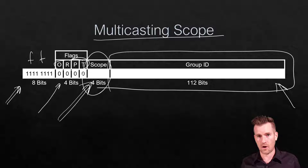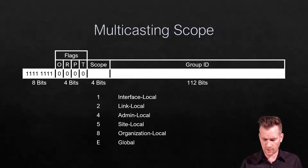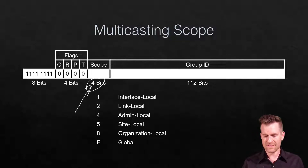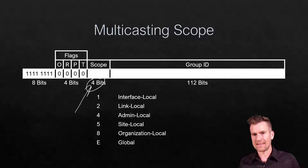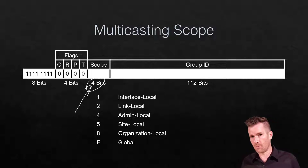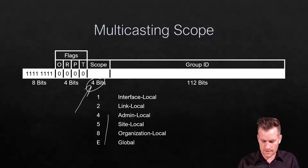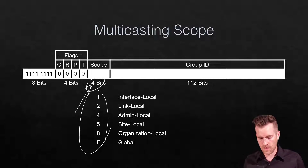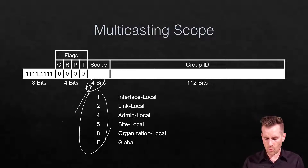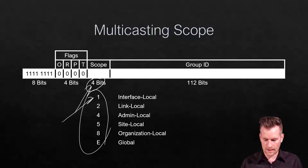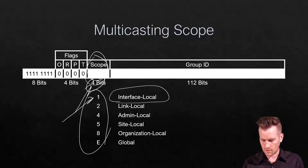The scope is four bits, so we have 16 possibilities — zero through F. Not all of them are defined; some are reserved. The ones we need to be concerned with: if there is a one in the scope field, that means there is 0001 in that scope field right here.